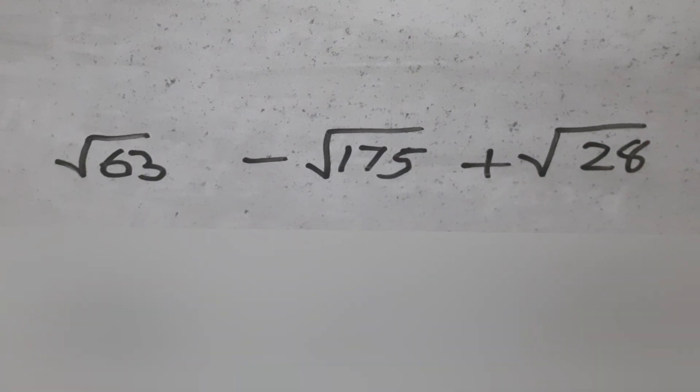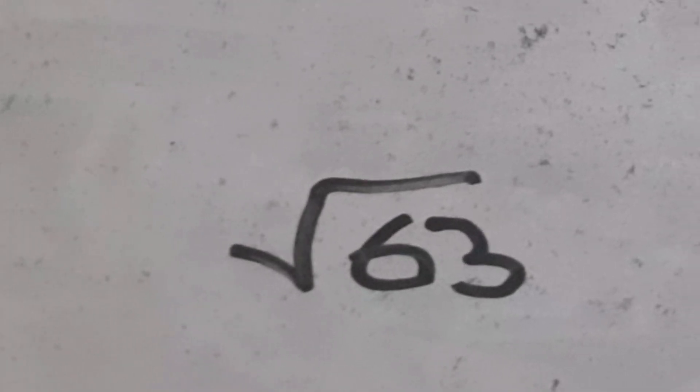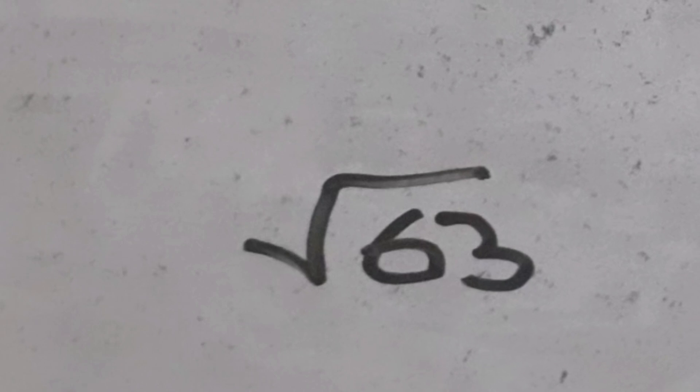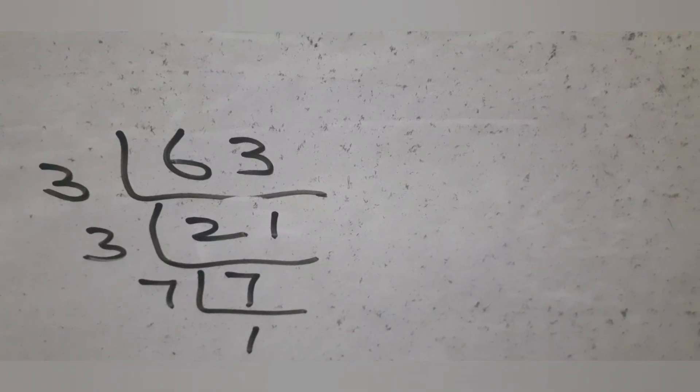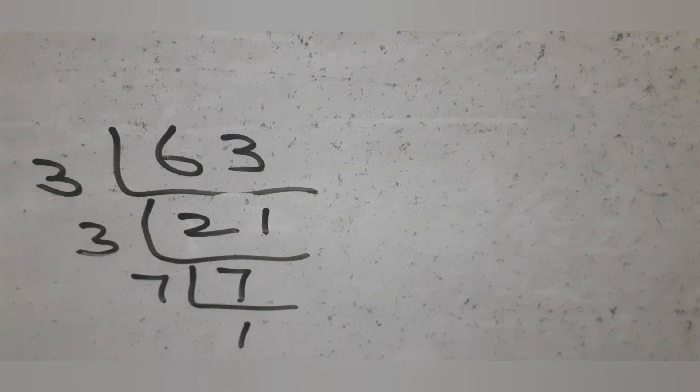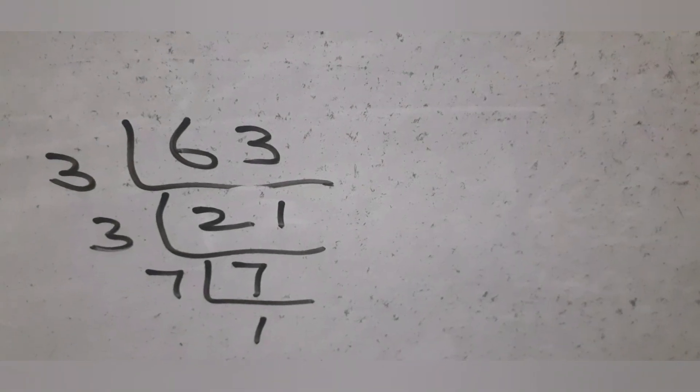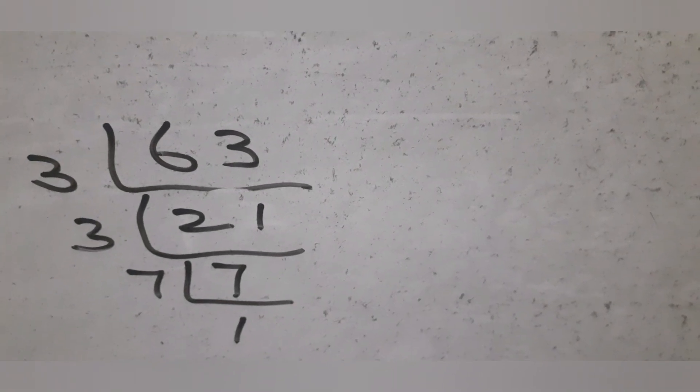Apply prime factorization to the numbers. Start with square root of 63. Clearly, 63 is a multiple of 3. When we divide 63 by 3, we get 21. Dividing 21 again by 3...